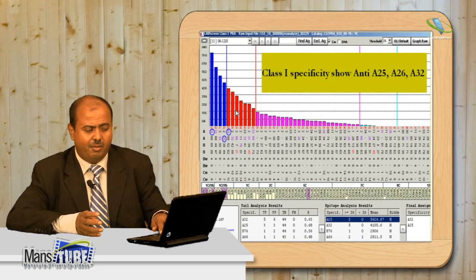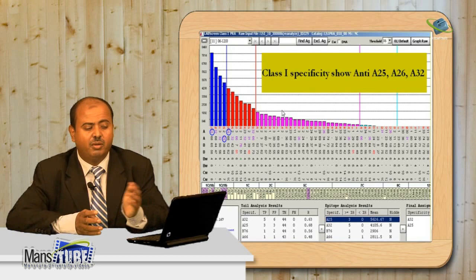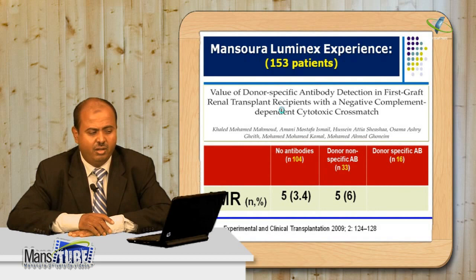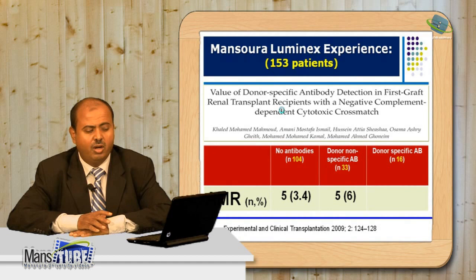For example, antibodies against HLA class I — anti-A25, A26, and A32 — if the donor HLA typing belongs to one of these, these are donor-specific antibodies. In our center, we stored pre-transplant sera for 153 patients, all with negative crossmatch, and followed them for four years. We then evaluated those stored sera by Luminex for DSA and non-specific anti-HLA antibodies.